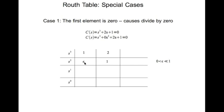And then we keep doing what we have to do. So this entry is epsilon times 2 minus 1 divided by epsilon. That entry is 1. That entry is 1. That entry is 1.